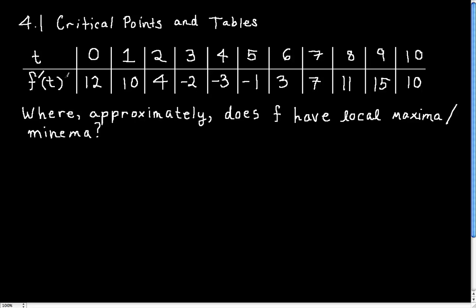Alright, so the question is, the exercise is where approximately does f have local maxima and minima? So in other words, we are essentially trying to find and classify the critical points of f given the values of its derivative on a table.